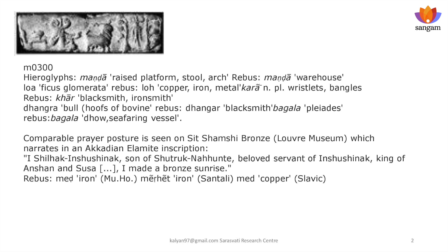Take a look at some narratives on the Indus seal. Here is seal M300 presenting a narrative. The Indus script hieroglyphs are: 'Manda' — raised platform/stool/arch — rebus reading 'Manda/Lova' = warehouse. 'Lova' — Ficus glomerata leaf — rebus 'Lo' = copper/iron/metal. 'Kara' — crystalets/bangles that the adorant wears — rebus 'Kar' = blacksmith/ironsmith. 'Tangara' — bull, hooves of bovine — rebus 'Tangar' = blacksmith. On the obverse of this tablet: 'Bagala' — Pleiades — rebus 'Bagala' thou = seafaring vessel.